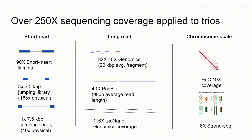The technologies applied were binned into three categories: short-read (standard Illumina sequencing), long-read (single molecule sequencing, as well as 10X and BioNano Genomics), and chromosomal scale — technologies able to determine if two separate reads came from the same chromosome even sequenced from opposite ends. We used trios and could have phased based on inheritance alone, but wanted to assess how well the technologies themselves could phase sequencing data.